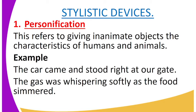For example, in the sentence: 'The car came and stood right at our gate.' The car cannot stand — what stands is a human being. So the car is given a characteristic of a human being; that is personification. Second example: 'The gas was whispering softly as the food simmered.' Whispering is a characteristic of a human being or animal, and it is given to the gas, so it is being personified.